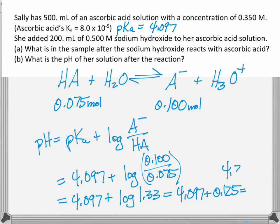So I can plug the numbers in and the pH at the end of the reaction between ascorbic acid and sodium hydroxide is 4.22.